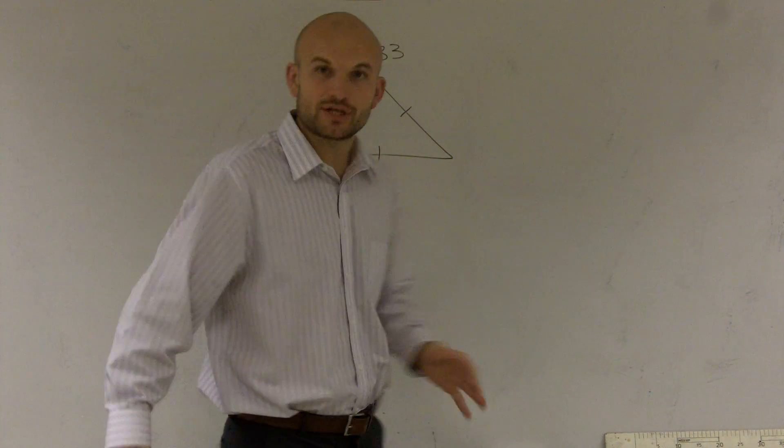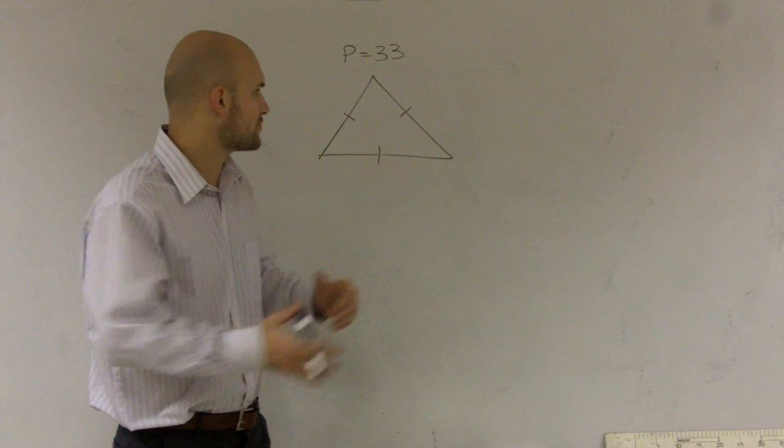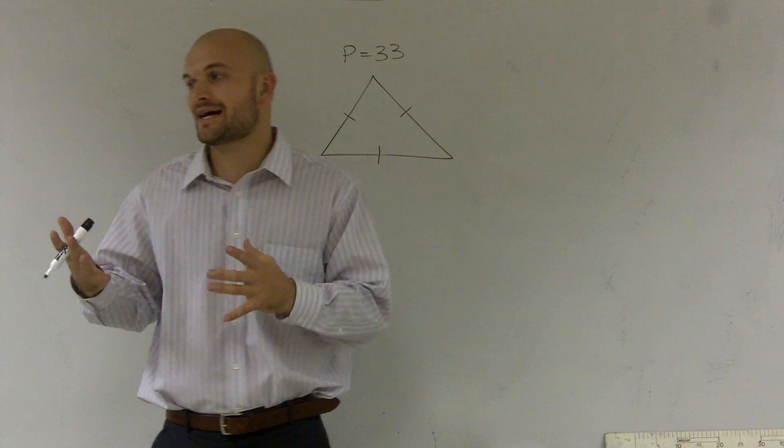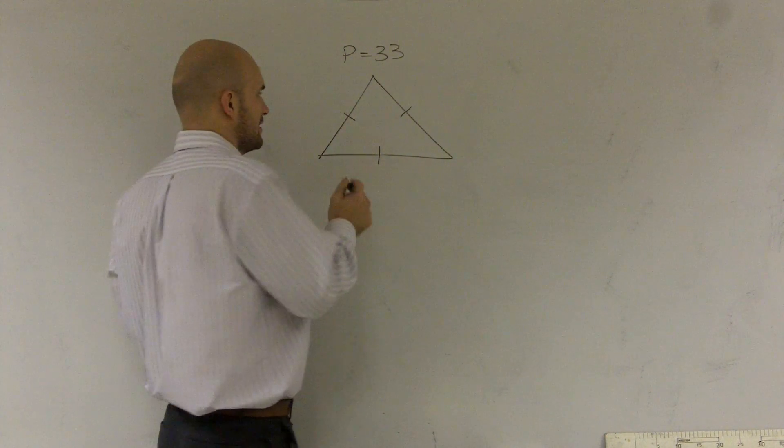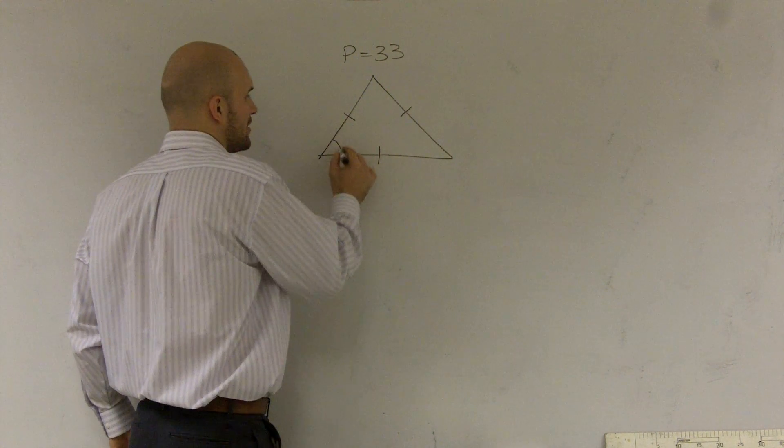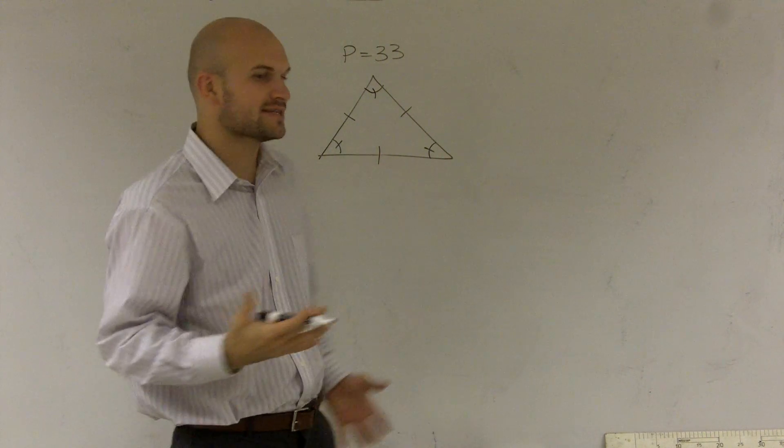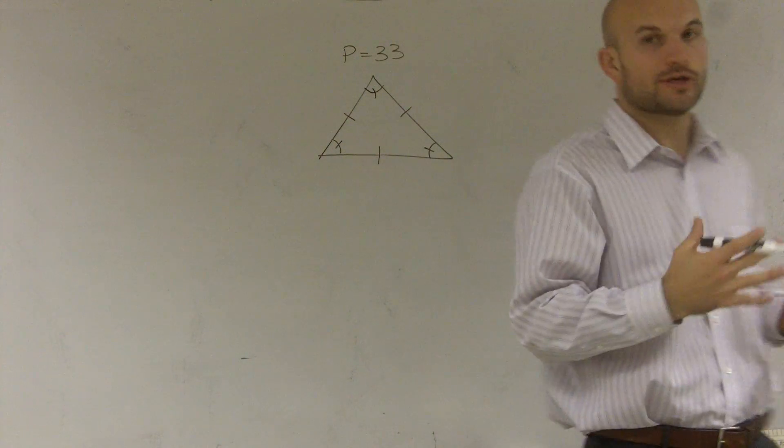This is what we call an equilateral triangle. What these little tick marks mean is that every single side is exactly equal to each other, not to itself. We also can say that every single angle is also equal to each other. We represent these tick marks to show they're equal to each other.